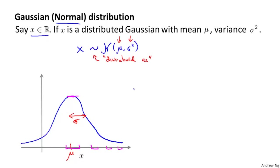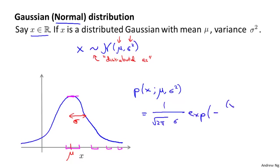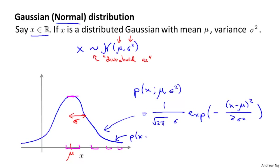Just for completeness, let me write out the formula for the Gaussian distribution. The probability of x — written as p(x; mu, sigma squared) — denotes that the probability is parameterized by mu and sigma squared. The formula for the Gaussian density is: 1 over root(2*pi) times sigma, times e to the negative (x minus mu) squared over 2 sigma squared. There's no need to memorize this; it's just the formula for the bell-shaped curve, and you can always look it up. This curve is p(x) plotted as a function of x for fixed values of mu and sigma squared.